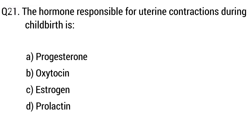Question 21. The hormone responsible for uterine contraction during childbirth is? The right answer is option B: Oxytocin.